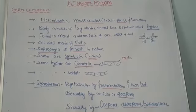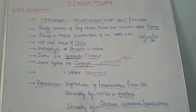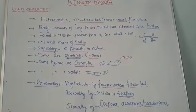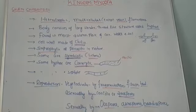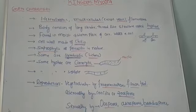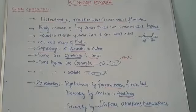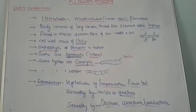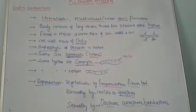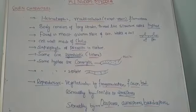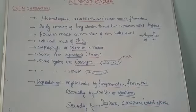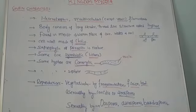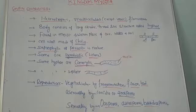With reference to their cell wall, fungi also have a cell wall like plants. However, the composition of the cell wall is not cellulose but chitin material.